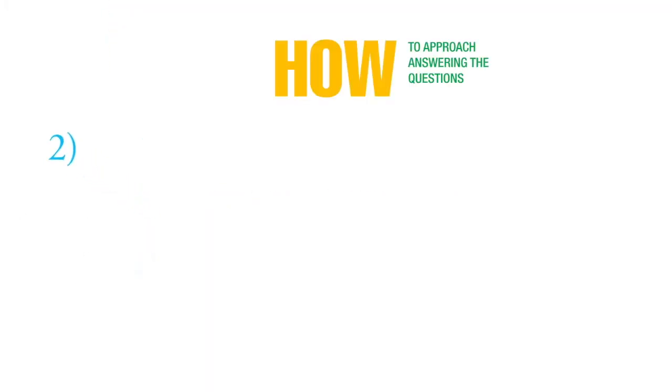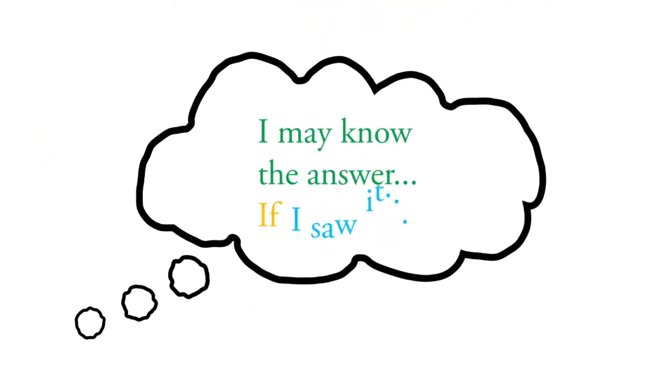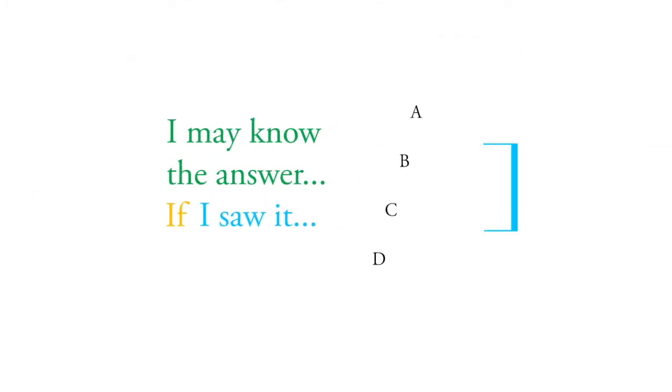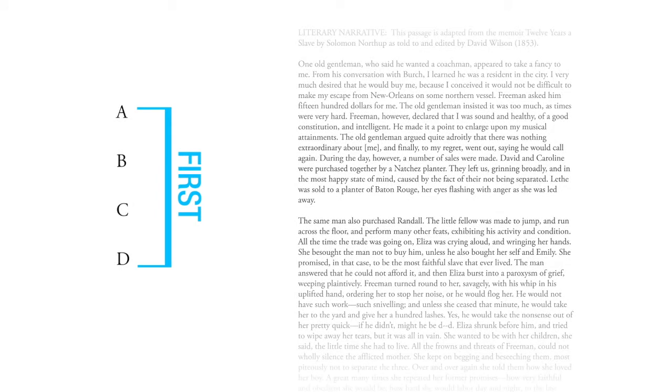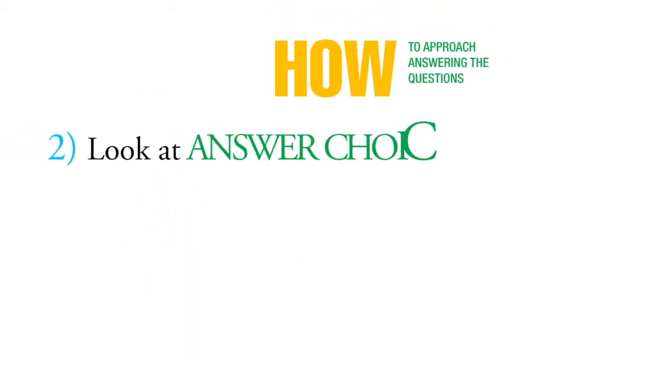Now for the second group of questions. These are the kind where you think you may know the answer if you saw it. So you're going to go through the answer choices first. Even if you think you might have to go back to the passage, you're still going to look at the answer choices before deciding about returning to the passage.